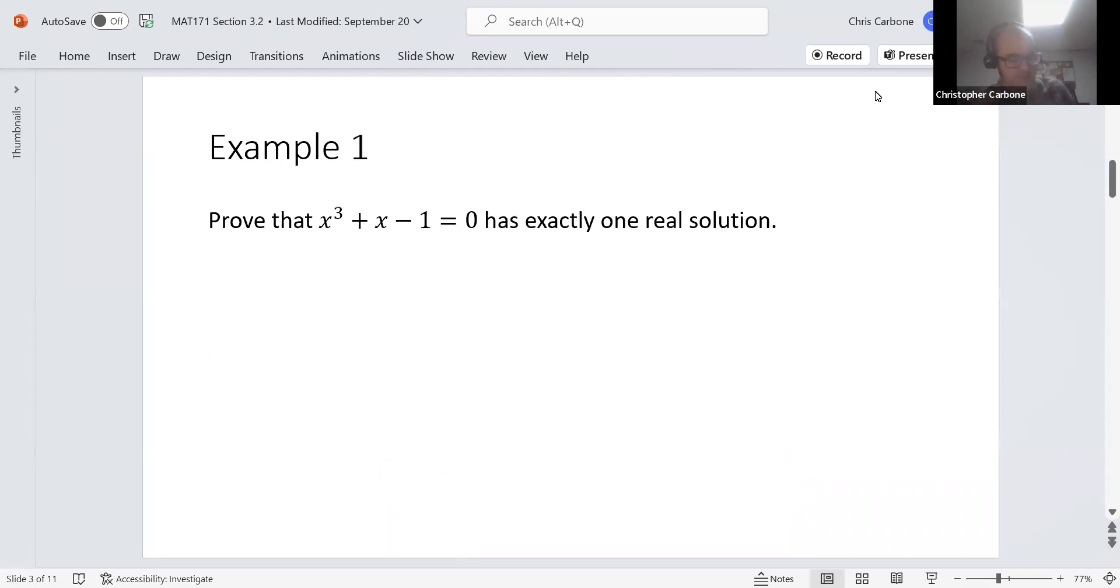So for the first example here, we want to prove that x cubed plus x minus one is equal to zero has exactly one real solution. So we are going to let f of x be equal to x cubed plus x minus one. We can clearly see that if we put in zero for x and f, we get a value of negative one and that's less than zero. Likewise, if we put in the value of one into the function, we get a value of positive one and that's greater than zero.